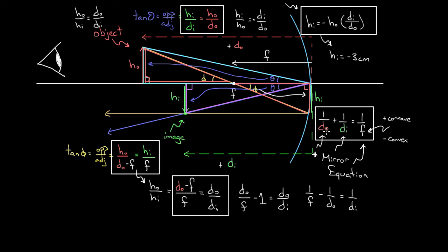There are other conventions you could use, but this is the one used in a lot of textbooks today. If you use this sign convention with the mirror equation, you'll get the correct relationship between object distance, image distance, and focal length. Using it with the magnification equation gives you the exact height of the image: a negative image height means it's flipped upside down, while a positive image height means it stays right side up.